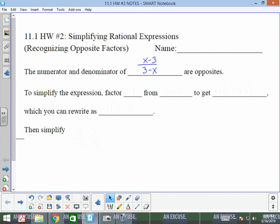The reason they're opposites is because in the numerator, x is positive, but in the denominator, x is negative. Same thing for the 3. In the numerator, 3 is negative, and in the denominator 3 is positive. So these are opposites.